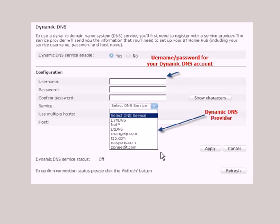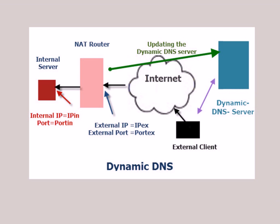If your router doesn't support dynamic DNS, most providers will give you a dynamic DNS client application. That client does the same job as the router would — it updates the records on the DNS server. It sits on your internal network and must run on a machine that's always on, since the service needs to be always running. It periodically checks your external IP address and updates the records on the dynamic DNS server. That's dynamic DNS, and you'd use it on a small business or home network.